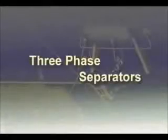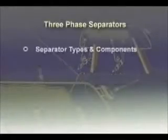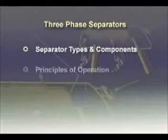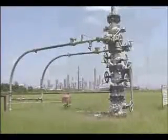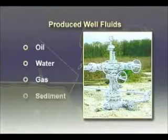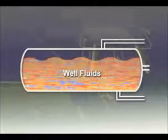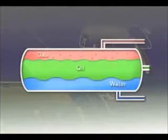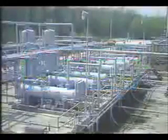This module on three-phase separators describes separator types and components, principles of operation, and design procedures. Produced well fluids typically consist of varying amounts of oil, water, gas, and sediment. The first step in processing these fluids is to split them up into their individual components, which generally takes place at some type of separator.